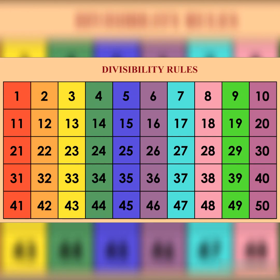Divisibility by 18 – a number is divisible by 18 if it is divisible by both 2 and 9.